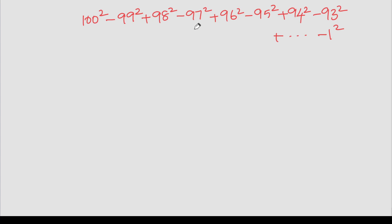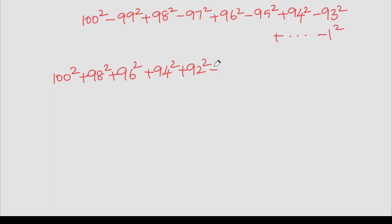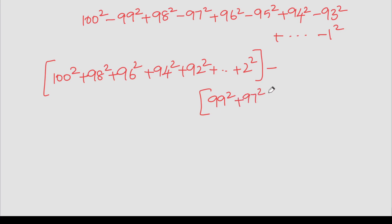So we have to solve this. We can solve it easily. Now we have to go from 100 to 1. For even numbers we have: 98 square, 96 square, plus 94 square, plus 92 square, and so on down to 2 square. Then for odd numbers: 1 square, plus 97 square, plus 95 square — up to 1 square. So now we can solve this: this is the sum of squares of even numbers.